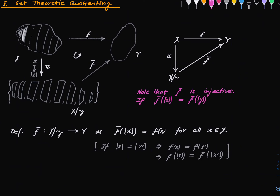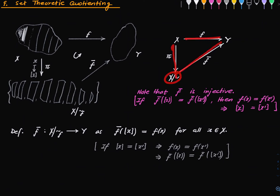The mathematical answer is a proof: if f-bar of the equivalence class of x equals f-bar of the equivalence class of x′, we want to show those equivalence classes are equal — that is what it means for f-bar to be injective. By definition this means f(x) = f(x′), which means x and x′ are in the same fiber, which is to say their equivalence classes are equal. So that shows injectivity of f-bar. Any function f factors through this set via an injective function.